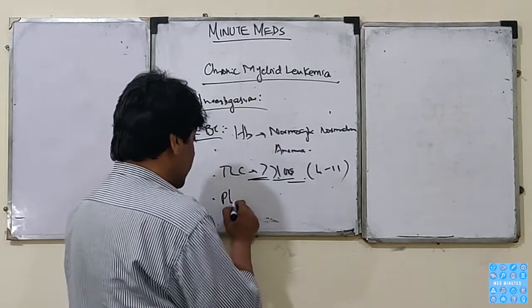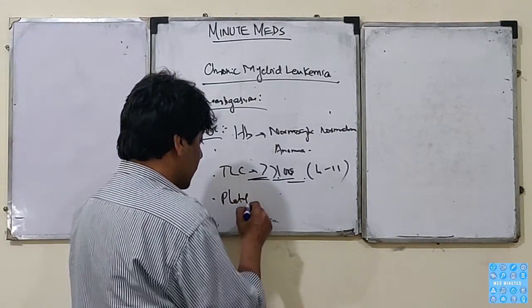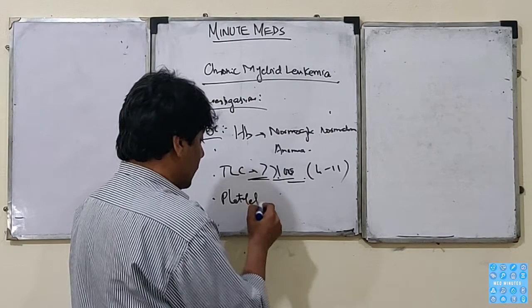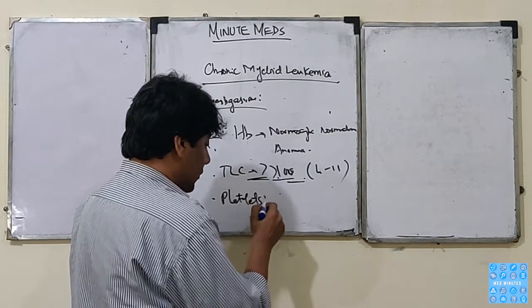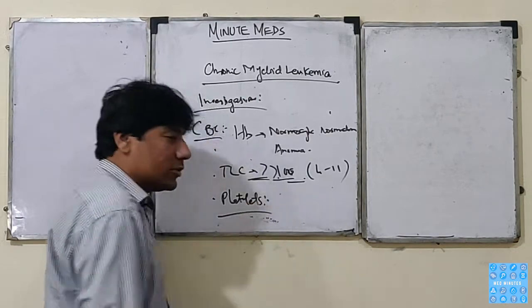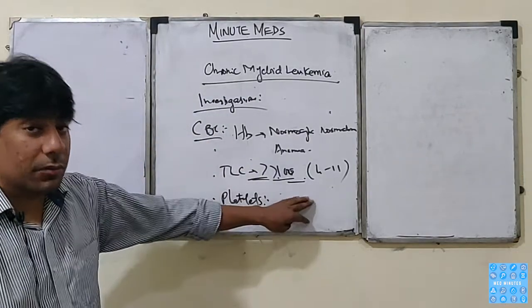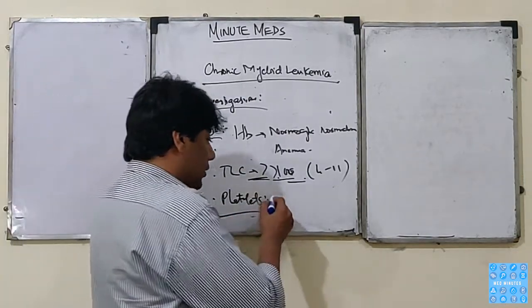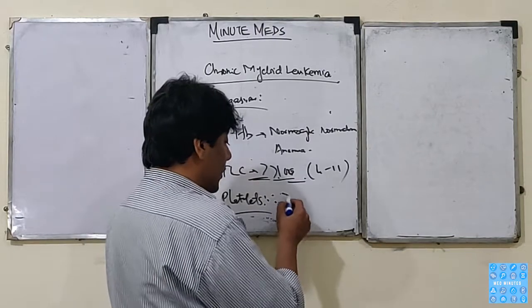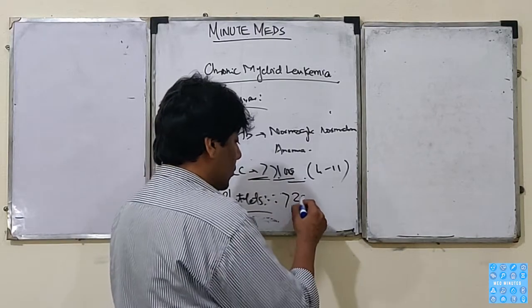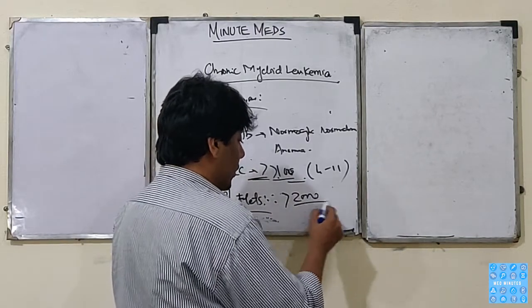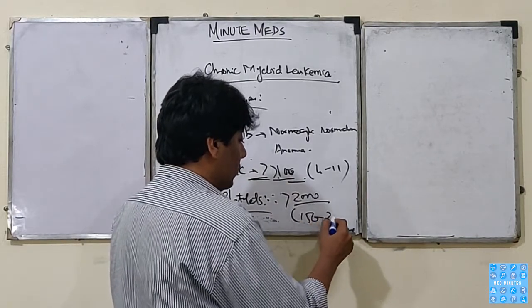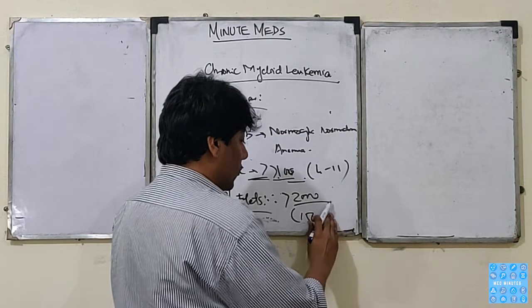Regarding platelets, there is thrombocytosis. Platelets can rise up to 2000, whereas the normal value is 150 to 450.